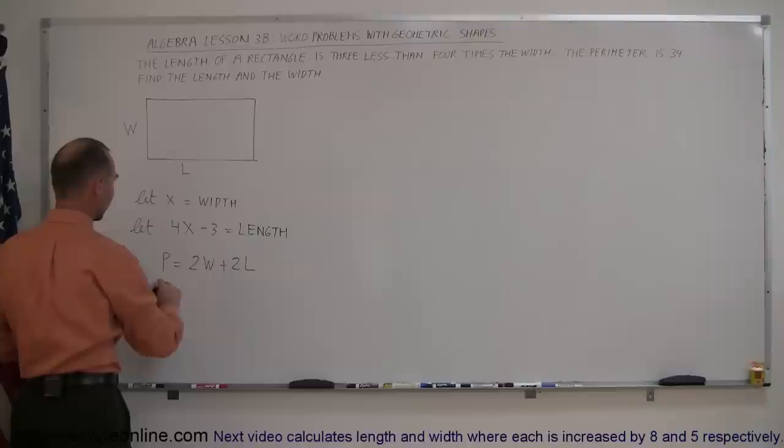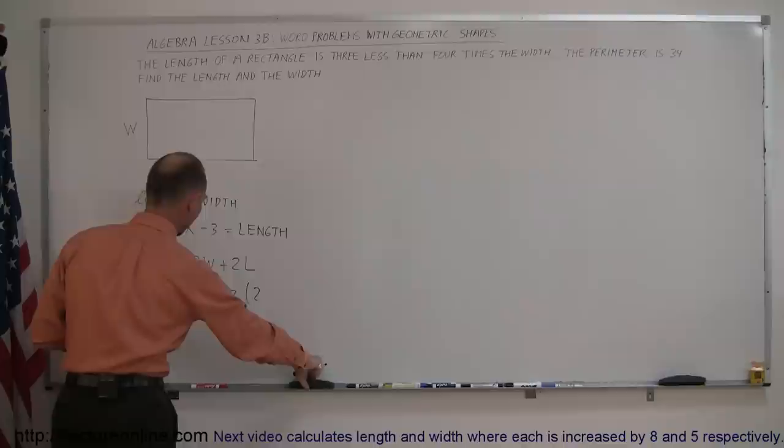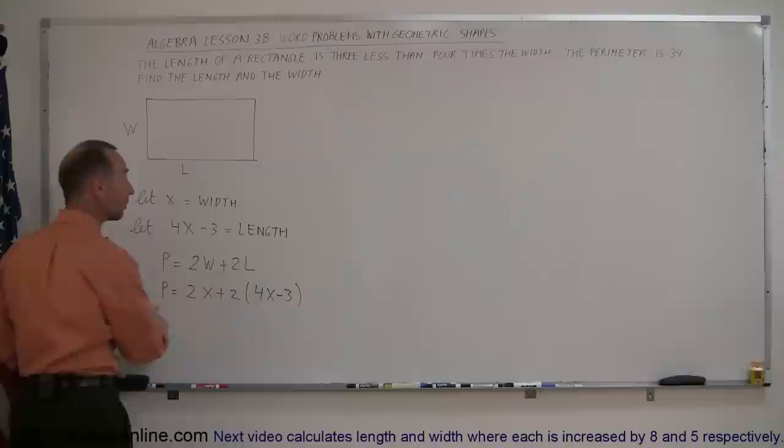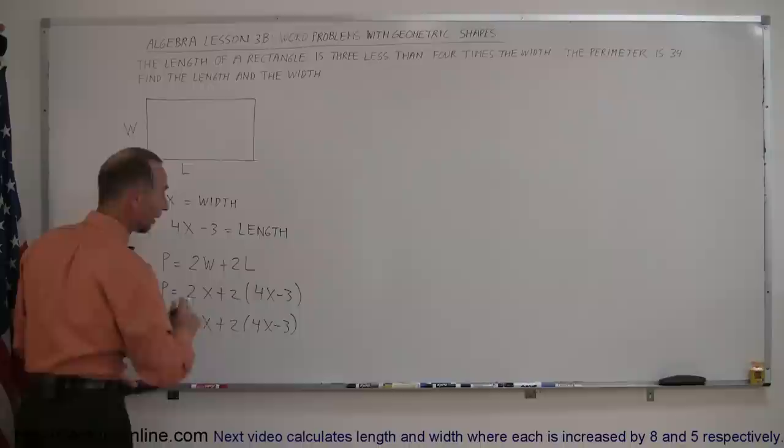Now we plug in what the width and the length are equal to in terms of x. So perimeter is equal to 2 times the width, which is x, plus 2 times the length, which is 4x minus 3. And of course, the perimeter was defined as 34. So now I can write that 34 is equal to 2x plus 2 times 4x minus 3. And now we just have to solve that for x.